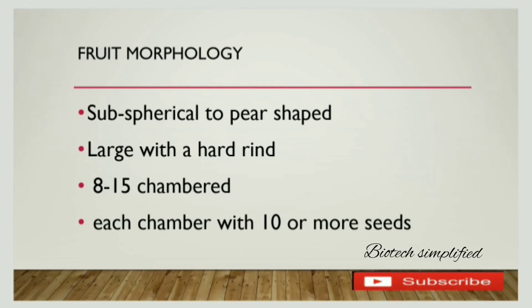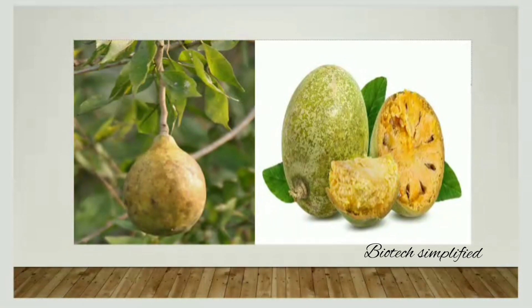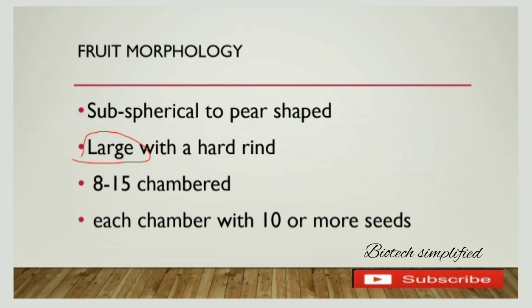Now let us discuss fruit morphology. The shape of the fruit ranges from subsphericall to pear-shaped — the first diagram shows a pear-shaped fruit and the second shows a spherical shape. The fruit is large and has a hard rind, meaning the skin covering the fruit is hard. The fruit is 8 to 15 chambered, and each chamber contains 10 or more seeds.